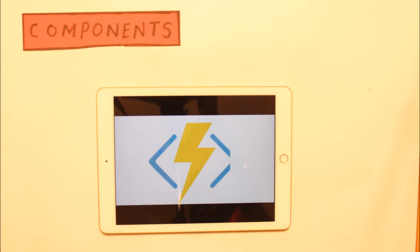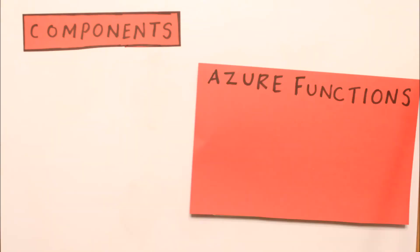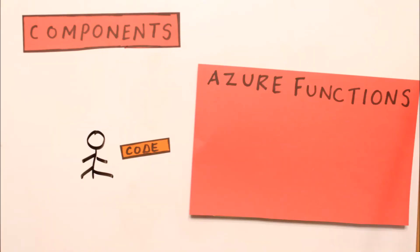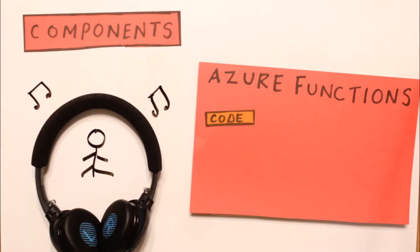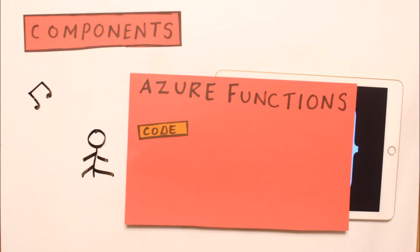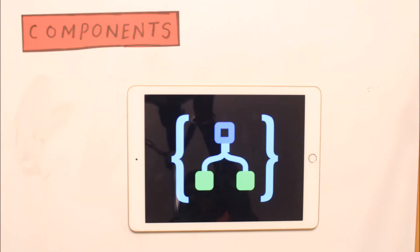Now let's look at some of the components which make up an Azure serverless computing model. First and foremost we have Azure Functions, which lets you run your custom code on demand without really having to worry about where it's running or its scalability. The next component is Azure Logic Apps.